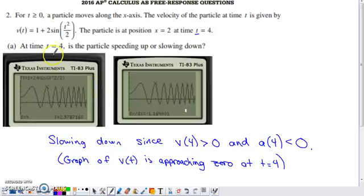In part a, at time t equals four, is the particle speeding up or slowing down? Speed, the easiest way to define it, is the absolute value of velocity. So if a velocity graph is approaching zero, the speed of the object is slowing down. If the velocity graph is moving away from zero, then the speed of the object is going up or increasing.